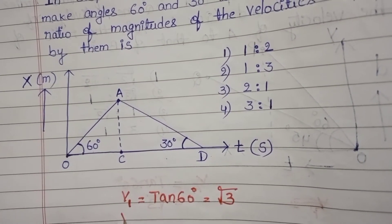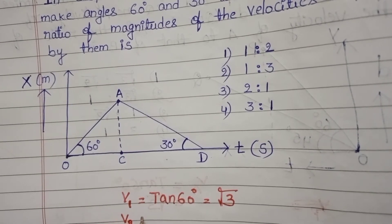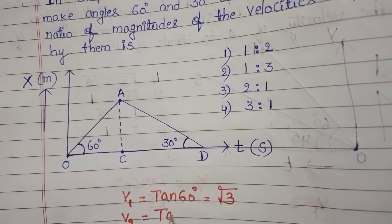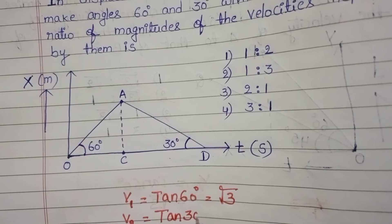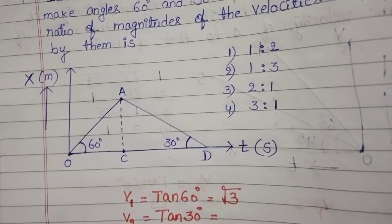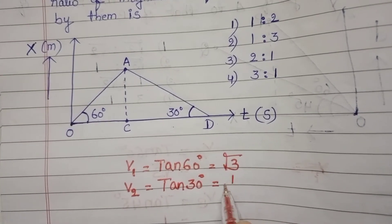The slope of the second straight line, let it be V2, equals tan 30 degrees. The value of tan 30 degrees is 1 by root 3.